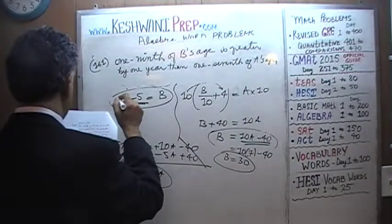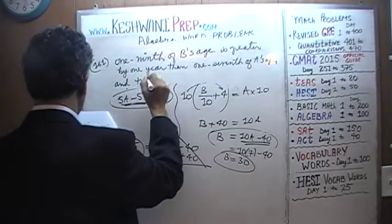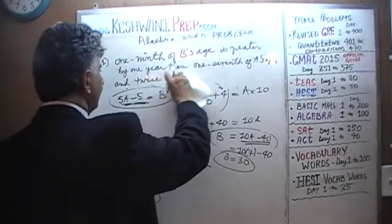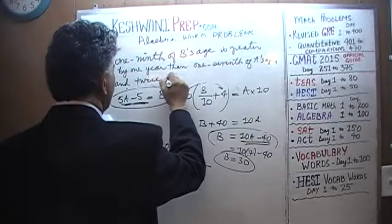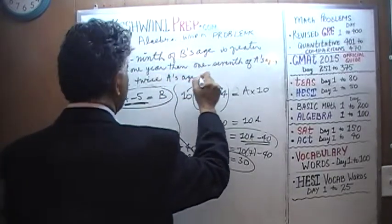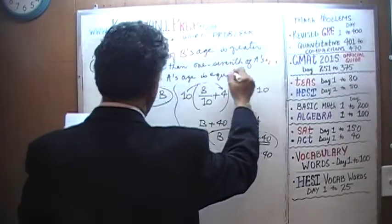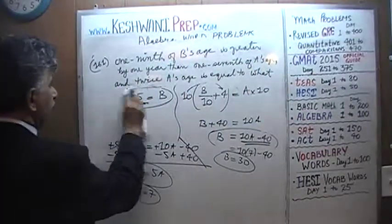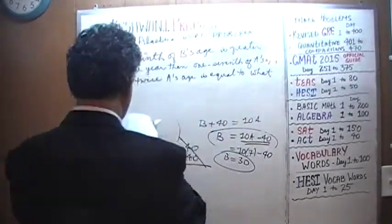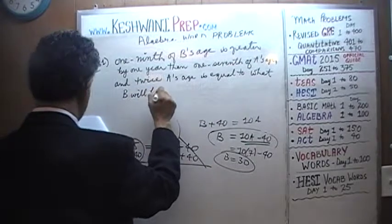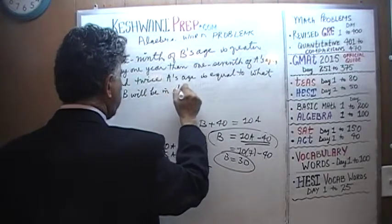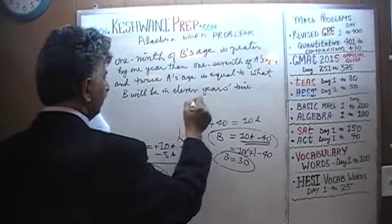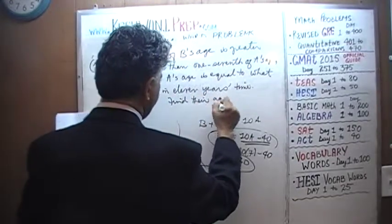Then they're going to tell us that twice A's age is equal to what B will be in eleven years' time. Find the ages.